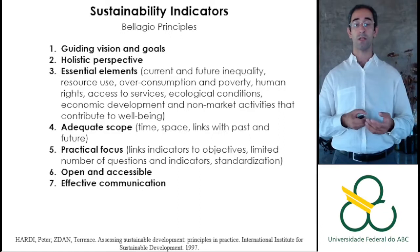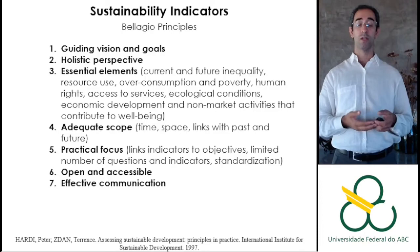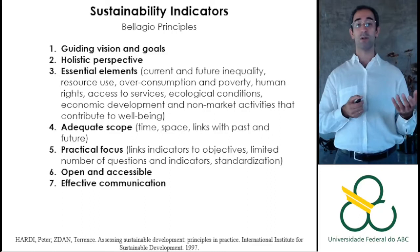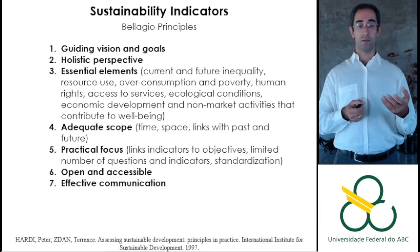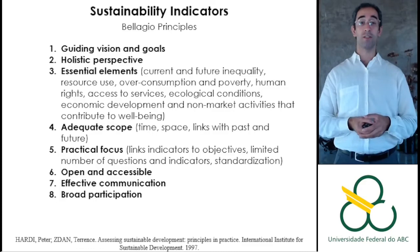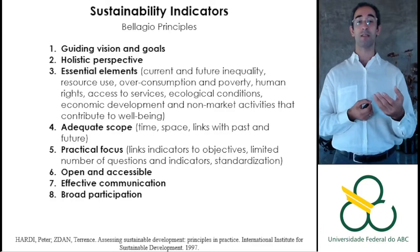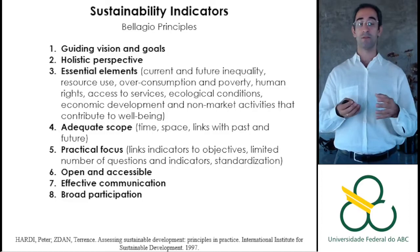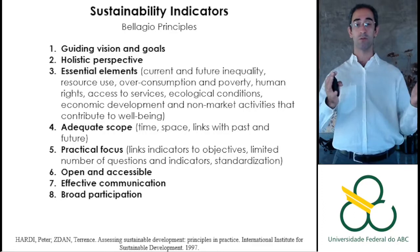It is important for indicators to be open and accessible for everyone, so everyone can monitor what is happening. They should be easy to communicate — if an indicator is too complex for people to understand, it will not be useful. And it is important to have broad participation in the process of selecting indicators, because people need to feel represented in them and that they reflect something they want to achieve. If just one group selects the indicators, others feel it is not related to them.